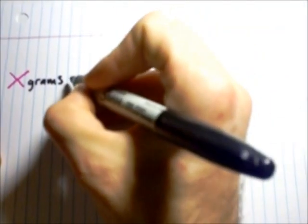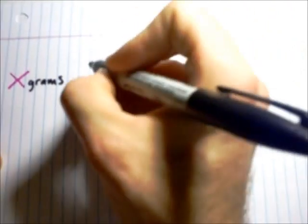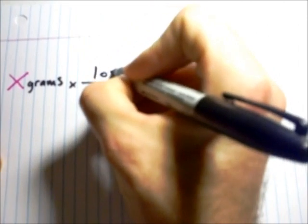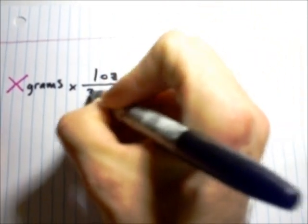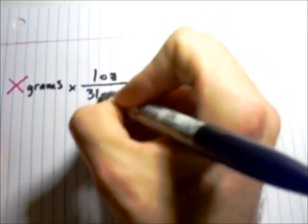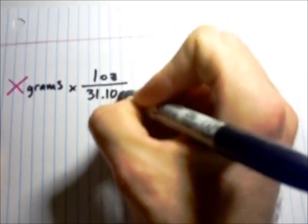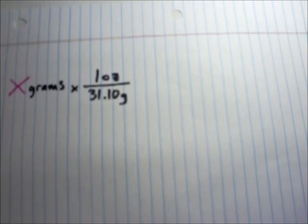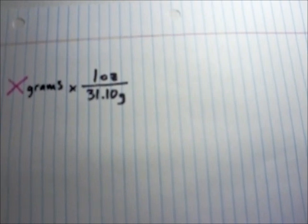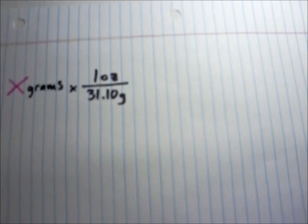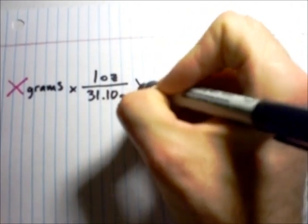All right, so we have x grams. And then we are going to multiply that number. So, we'll say times for every one troy ounce. Remember, those are troy ounces per 31.10 grams, which is like really 31.1034768 grams, but let's make it a little bit more simple for this. So, that's constant. That's always going to be that.